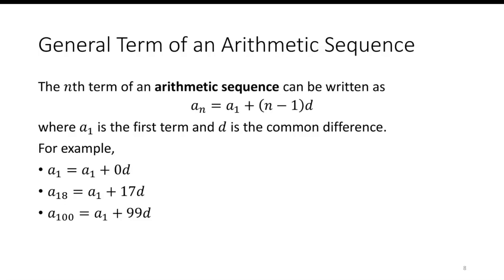The general nth term of an arithmetic sequence is written in the form of a sub 1 plus n minus 1 times d, where a sub 1 is the first term and d is the common difference.